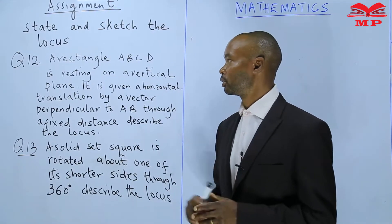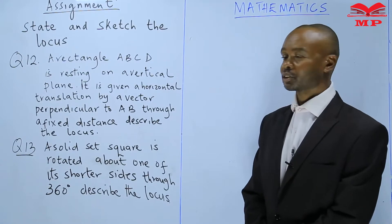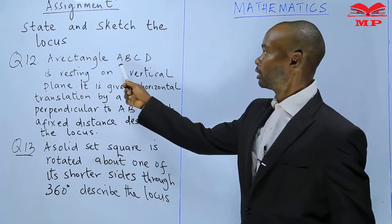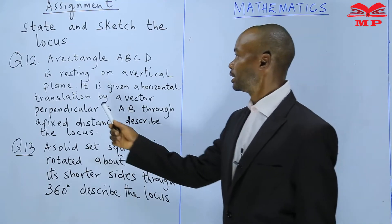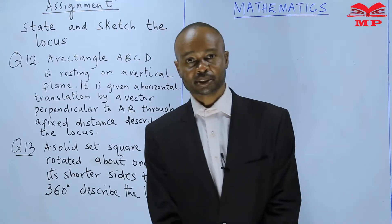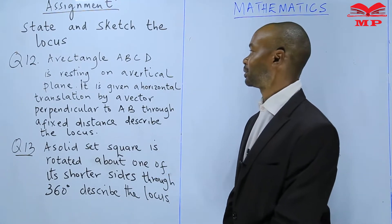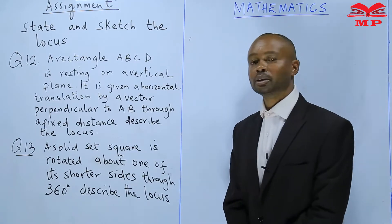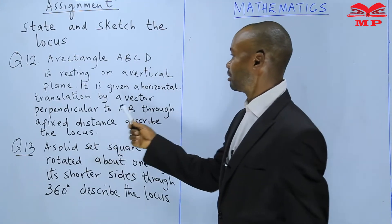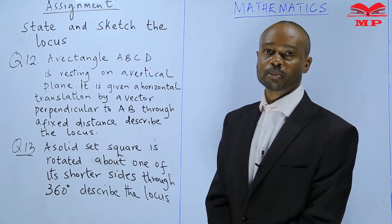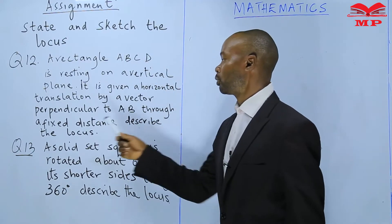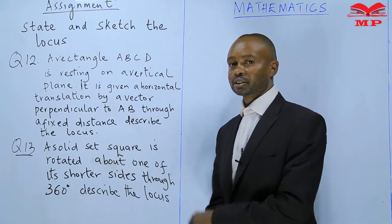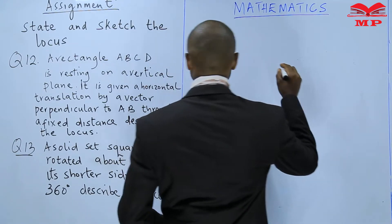Looking at the board, we have the first question of the assignment. Question 12: Sketch the locus. A rectangle ABCD is resting on a vertical plane. It is given a horizontal translation — a movement by a vector perpendicular to AB — through a fixed distance. Describe the locus.